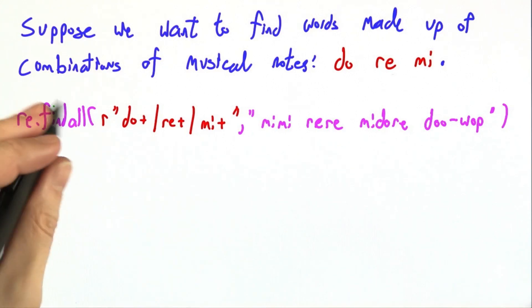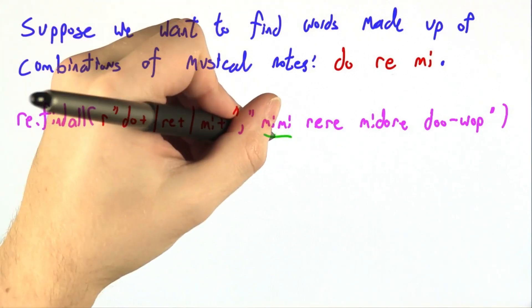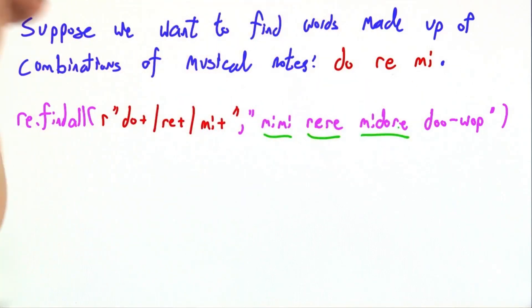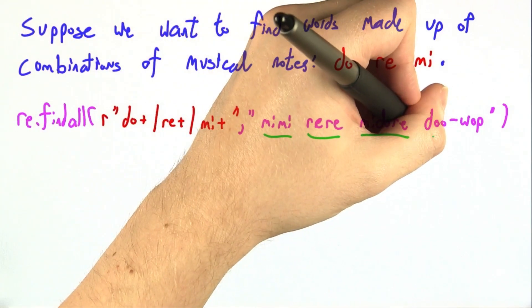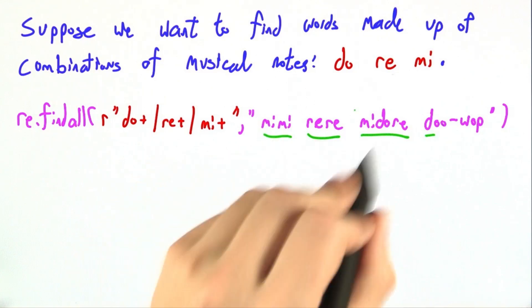And we want to see which ones we get. We'd like to get mi, mi as one, re, re as another, mi, do, re. And then maybe do just sort of as a corner case, but mostly these three.